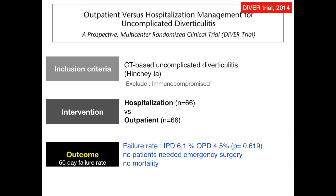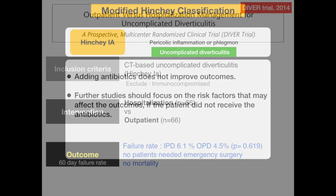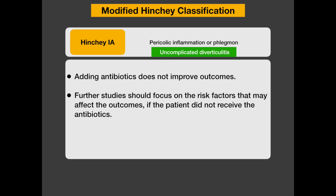The next question is whether we need to admit these patients to the hospital. A trial compared uncomplicated diverticulitis patients admitted to the hospital versus treated as outpatients. There was no difference in failure rate, no patients needed emergency surgery, and there was no mortality. In conclusion, for uncomplicated diverticulitis, adding antibiotics does not improve outcomes, so antibiotic use should be individualized. Further studies should focus on risk factors — such as CT or lab findings — that may predict failure without antibiotics.